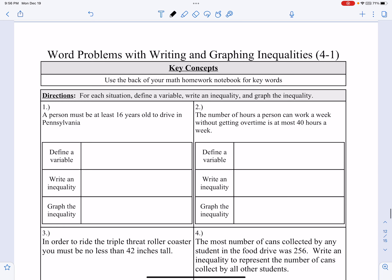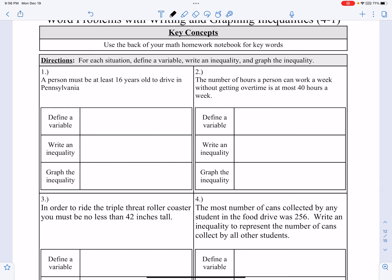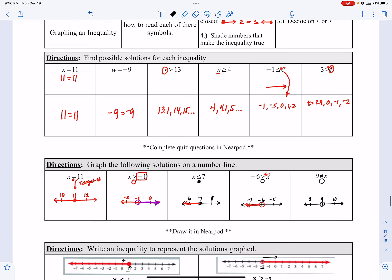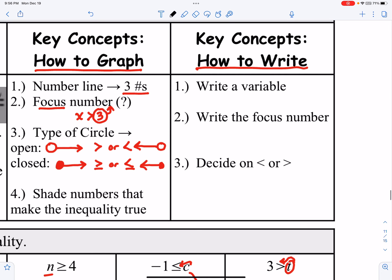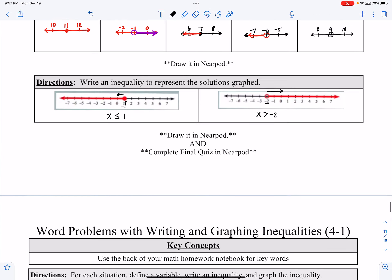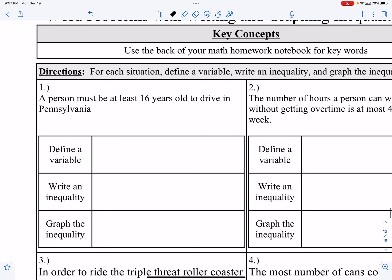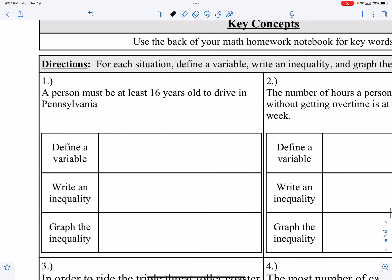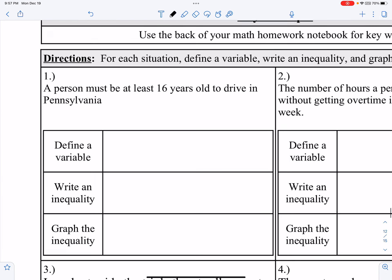Let's take a look at 4-1 and do some word problems. When you look at word problems, identify what the variable is going to be — pick a variable that makes sense. Find that focus number, then decide if things are less than, greater than, less than or equal to, greater than or equal to, or possibly not equal. A lot of this is making synonyms for the phrase.